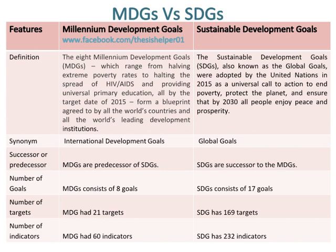Whereas, the Sustainable Development Goals, SDGs, also known as the Global Goals, were adopted by the United Nations in 2015 as a universal call to action to end poverty, protect the planet, and ensure that by 2030 all people enjoy peace and prosperity. The synonym of MDGs is International Development Goals, whereas the synonym of SDGs is Global Goals.